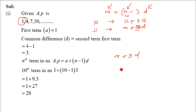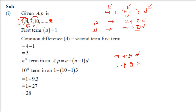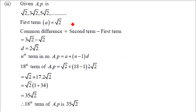What is the first term? A is 1. So it is 1 plus 9 into D. What is D? It is 4 minus 1. D is always computed by taking the next consecutive term and subtracting the previous one. So 4 minus 1 equals 3. You can also take 10 minus 7 which is also 3. The common difference is 3. So 9 times 3 is 27, and 27 plus 1 is 28. This is how you find the nth term.